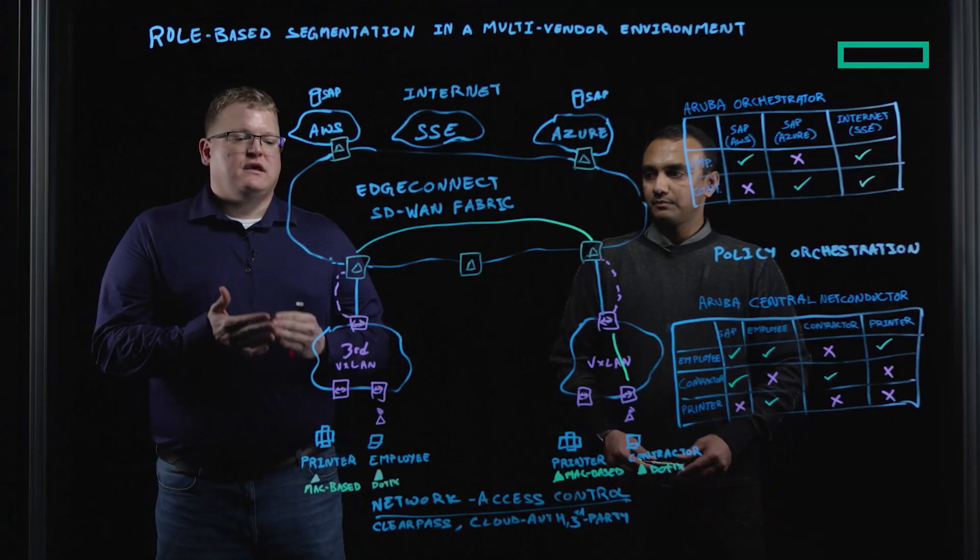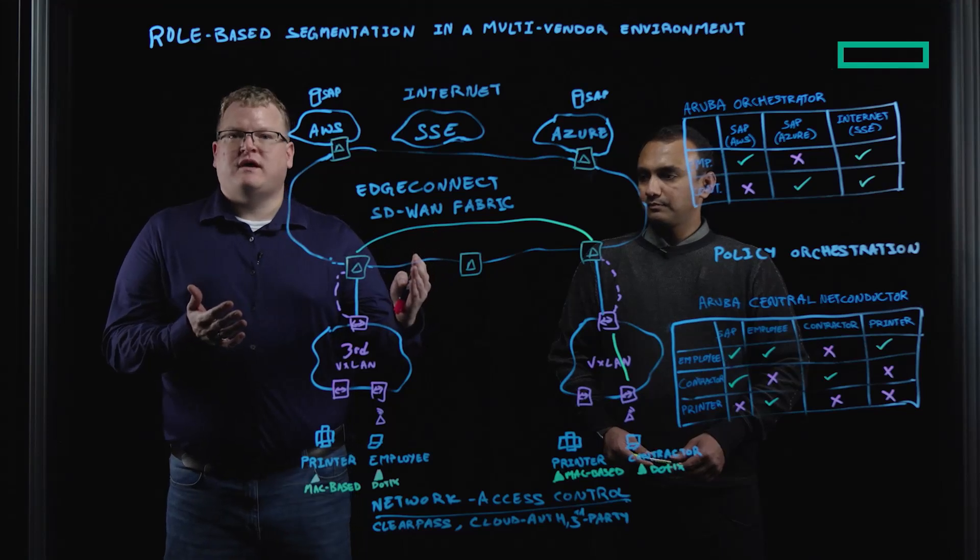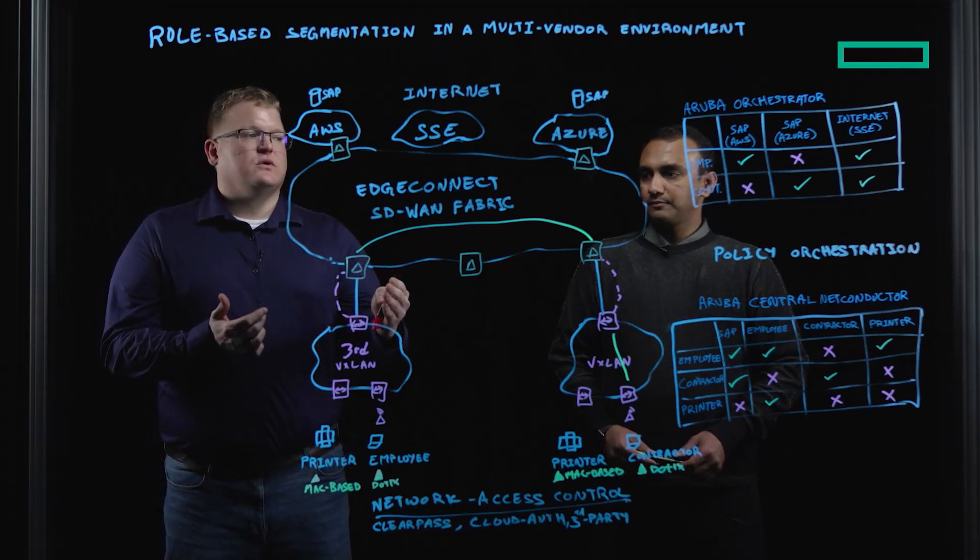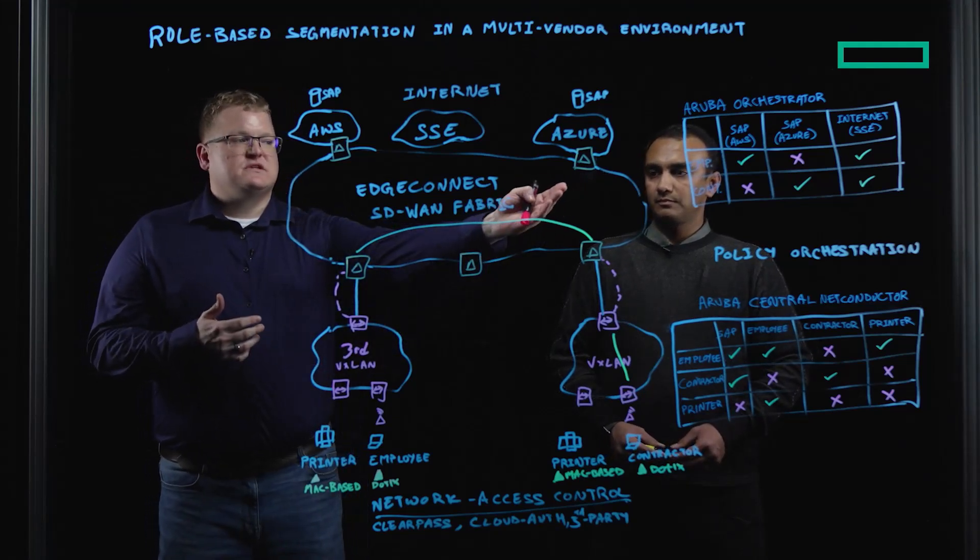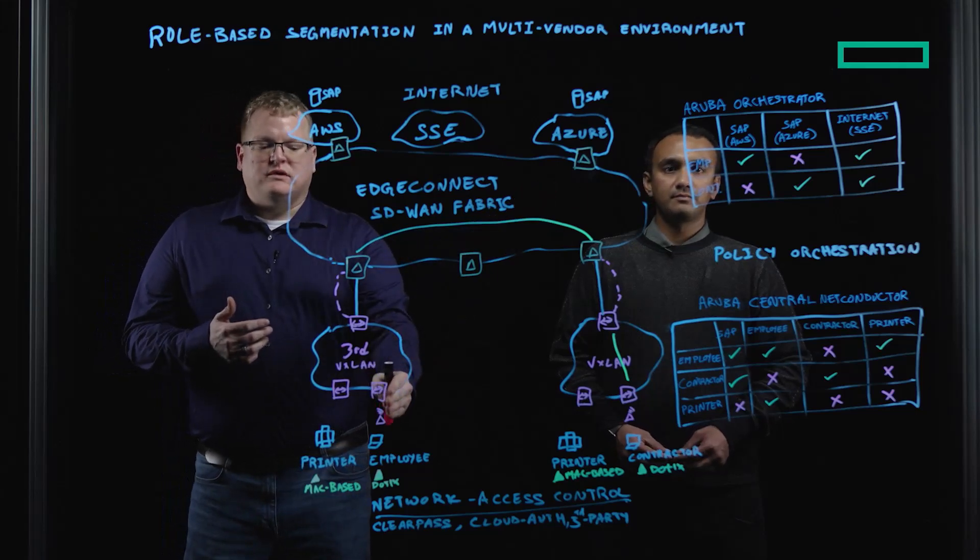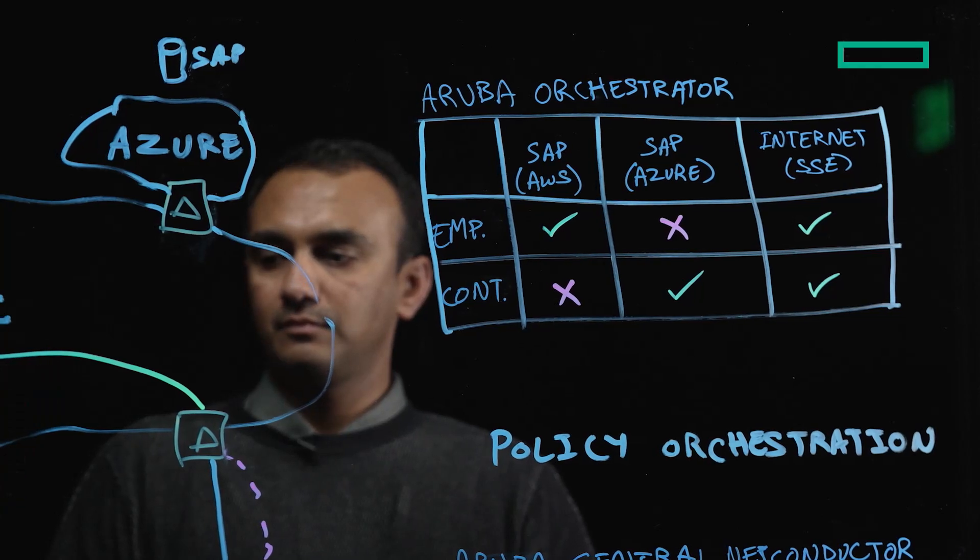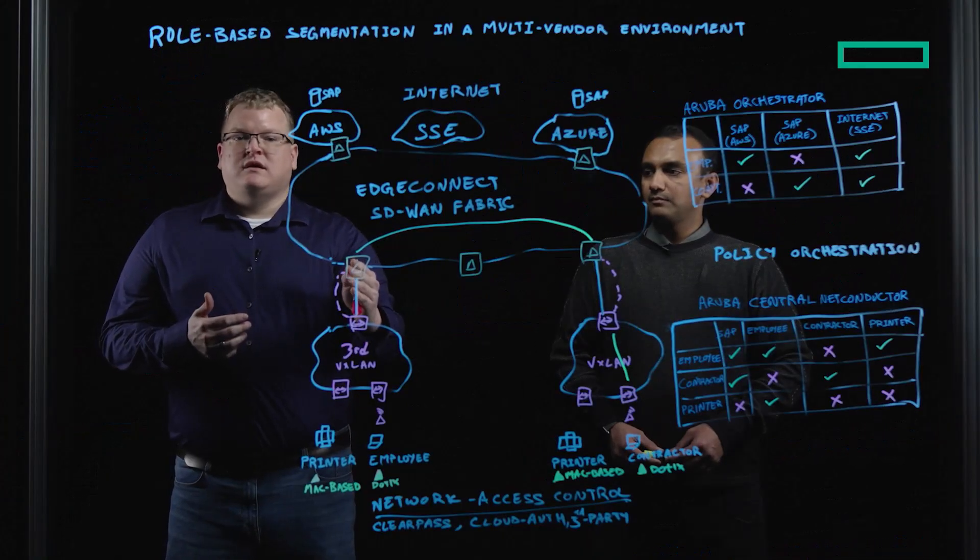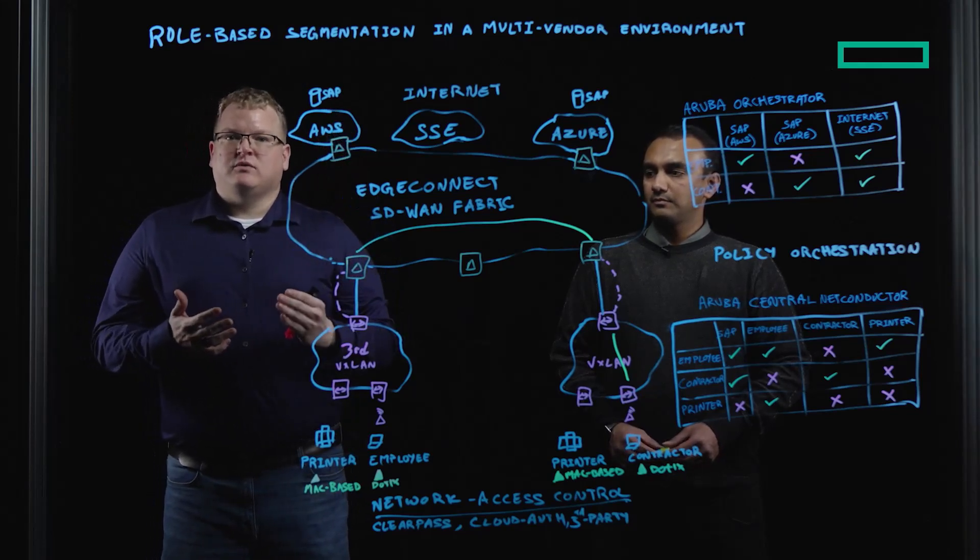Additionally, even with the end-to-end role-based segmentation carried via the SD-WAN fabric, the EdgeConnect SD-WAN is also able to enact on that role and steer traffic according to our SD-WAN policy. So in this simple example, we're showing an employee that needs to access the SAP application is directed from the LAN fabric to the EdgeConnect SD-WAN from the EdgeConnect SD-WAN up to the SAP instance hosted inside of AWS.